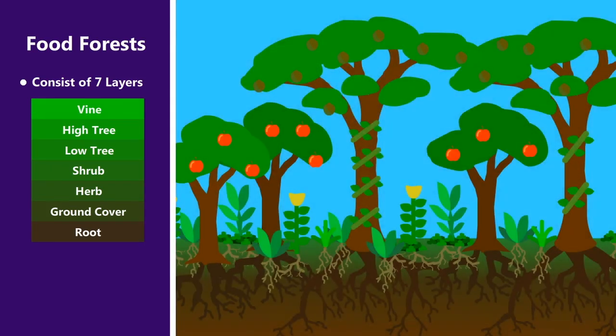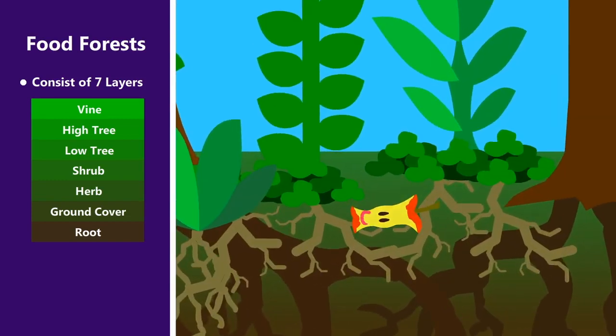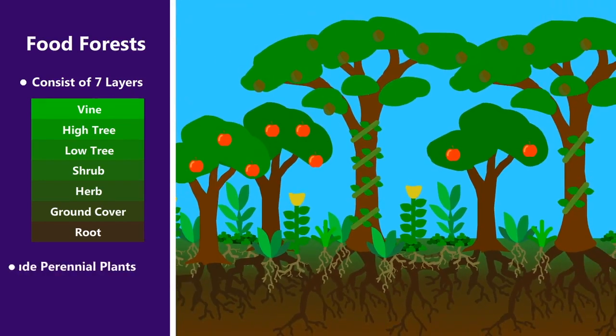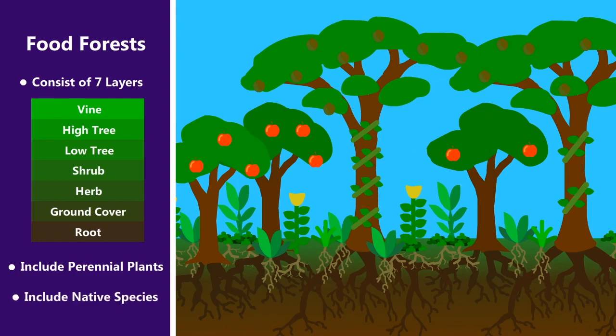Every one of these layers either produces some sort of food or medicine, or is in some way helpful to the system as a whole. The plants are mostly perennials and include as many native species as possible.